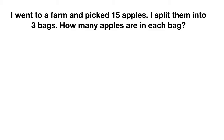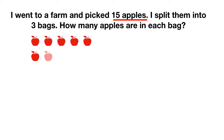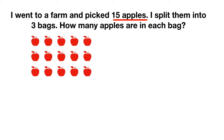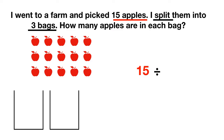I picked 15 apples, so I can imagine an image of 15 apples and write a number sentence with a 15. Then I'm splitting them up, and when you are splitting things up, you are doing division. I can see I'm splitting them into three bags. I could draw those bags — one bag, two bags, three bags — and write that I'm splitting into three bags in my number sentence.